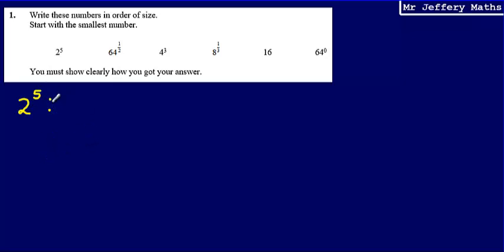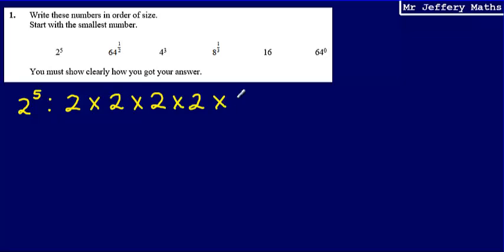First of all, 2 to the power of 5. Now, 2 to the power of 5 is 2 times 2 times 2 times 2 times 2. That's what that power of 5 means — it just means we're multiplying that number by itself 5 times. So 2 times 2 is 4, times 2 again is 8, times 2 again is 16, times 2 again is 32.